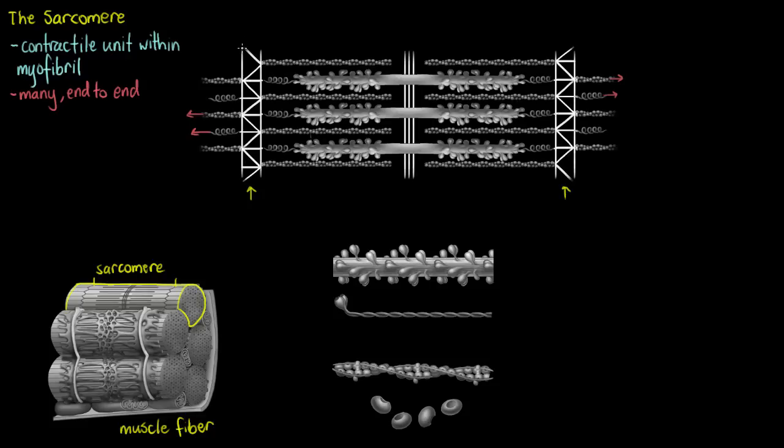Our sarcomere has a few distinct features that we can use to identify the different parts of it. The first of them being the z-disc. This portion that we're going to see at either end is going to form the point where one sarcomere joins onto the next. So sarcomeres go from one z-disc to the next, so they're going to be at the ends.